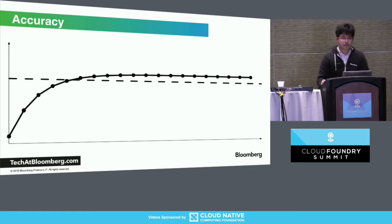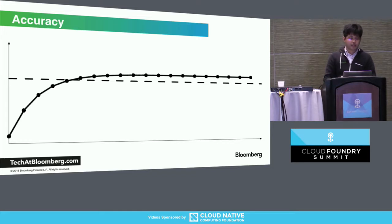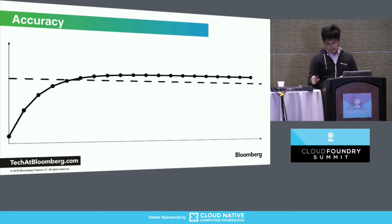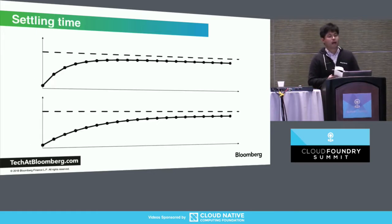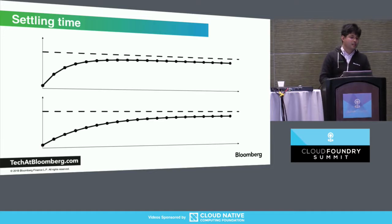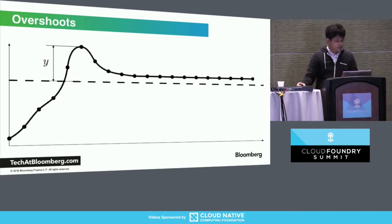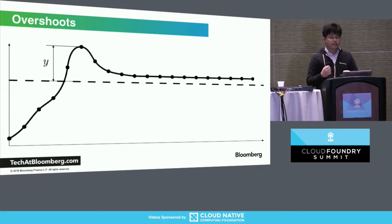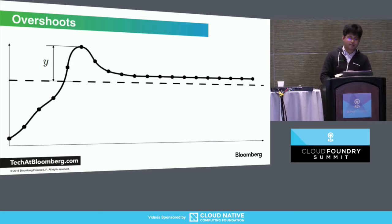Another obvious property you want in your autoscaler is accuracy — how well within the bounds are you reaching your target? And if you reach your target, it also matters how fast. You can think of it like mean time to recovery in operations. Depending on your business case, you may afford to scale out slower. But if you want to recover faster, you can explicitly design an overshoot — over-provision at first, then gradually settle down. That's a design trade-off.